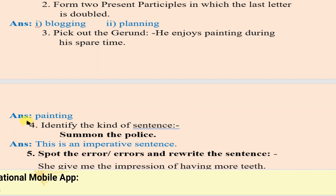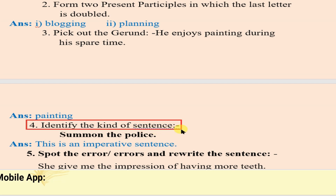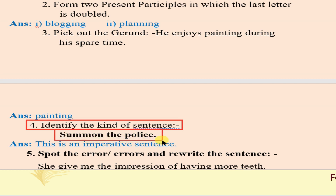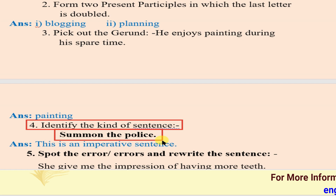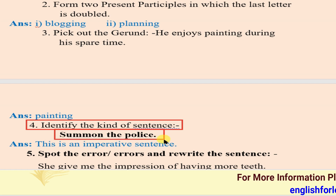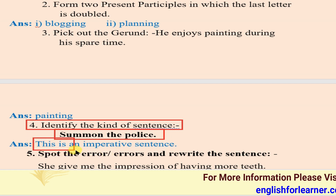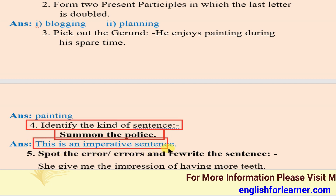Next, activity number four: identify the kind of sentence. The sentence given is: 'Summon the police.' 'Summon' means to call. Identify which type of sentence it is. As you know, the sentence begins with 'summon', which is a verb, so this sentence is an imperative sentence.